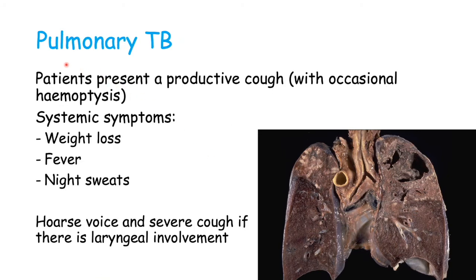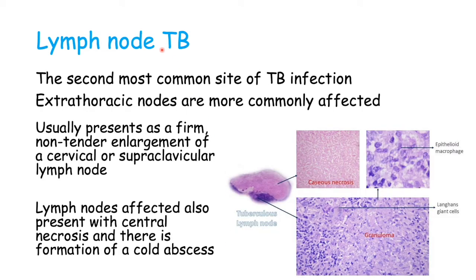How will a patient with TB present? If it is tuberculosis infecting the lungs — pulmonary TB — patients will present with a productive cough with occasional haemoptysis, systemic symptoms such as weight loss, fever, and night sweats, and a hoarse voice and severe cough if there is laryngeal involvement. If TB is affecting the lymph nodes, which is the second most common site of TB infection, we will see some swollen lymph nodes. Extrathoracic nodes are more commonly affected and they usually present as a firm, non-tender enlargement of a cervical or supraclavicular lymph node.